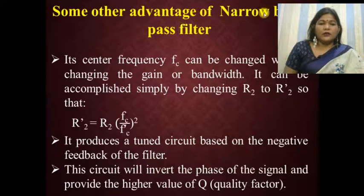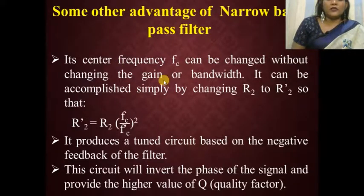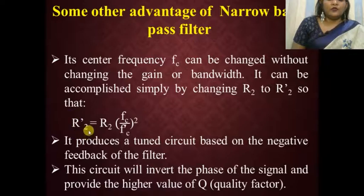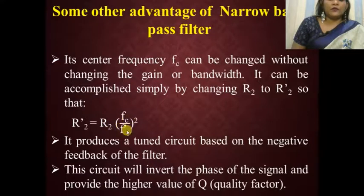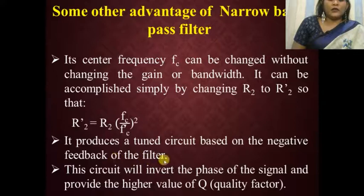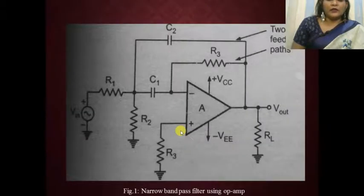An advantage of the narrowband pass filter is that its center frequency FC can be changed without changing the gain or bandwidth. This is accomplished simply by changing R2 to a new value R2', which can be calculated using the provided formula. This circuit produces a tuned response based on negative feedback, inverts the phase of the signal, and provides a higher Q value.